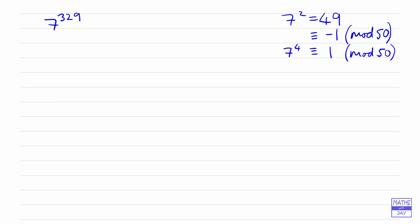Another way of working this out is just to write down what 7 to the power of 4 is as a number and it's 2,401, and so you can see that when you divide that by 50 you've got a remainder of 1.